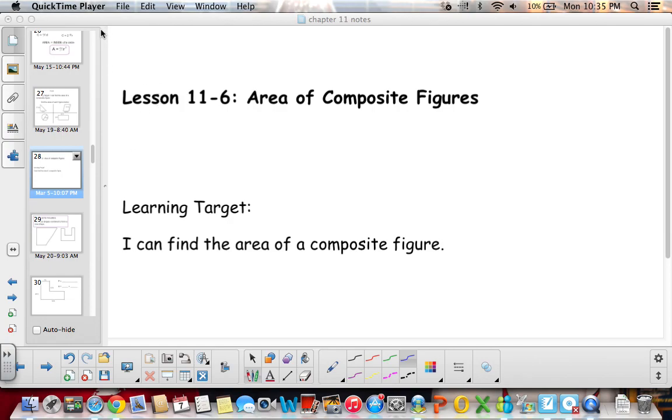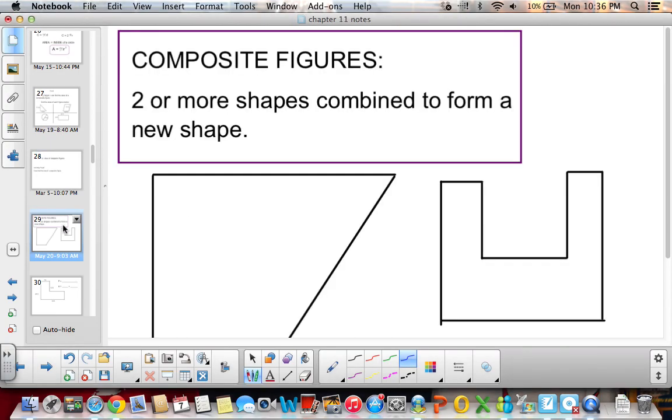Hi 6th graders, we're on lesson 11-6 which is area of composite figures. So our learning target is being able to find the area of a composite figure. You'll want to write this down in your notebook. A composite figure is two or more shapes combined to form a new shape.